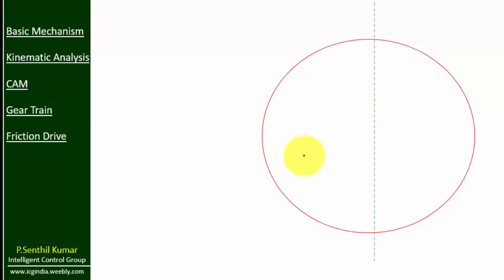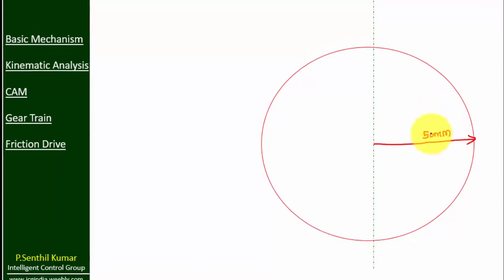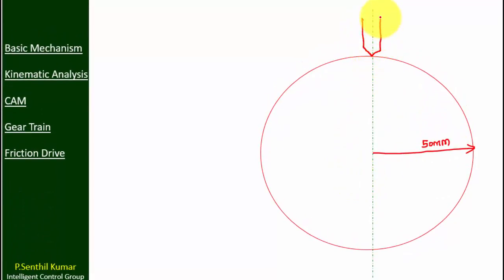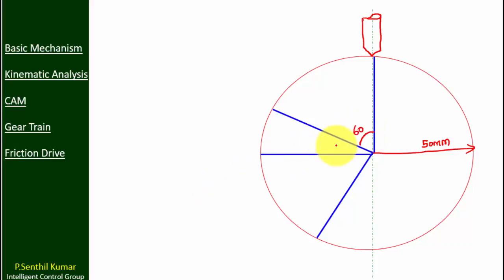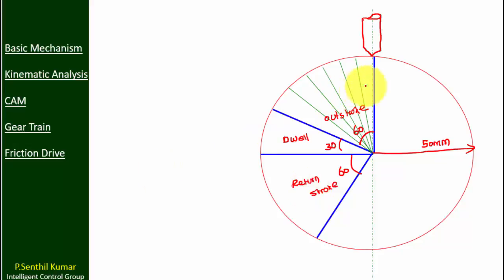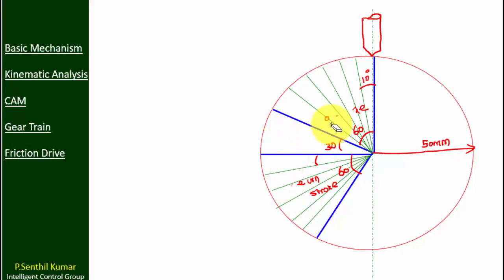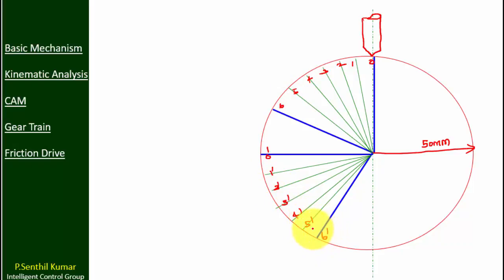Let us draw the CAM profile for the knife edge follower. Draw a base circle of radius 50 mm. Mark the knife edge follower. Divide the base circle into out stroke, dwell, and return stroke. Divide out stroke and return stroke into 6 equal parts, each division 10 degrees. Mark 0, 1, 2, 3 up to 6 and 0', 1', 2' up to 6' on the base circle.